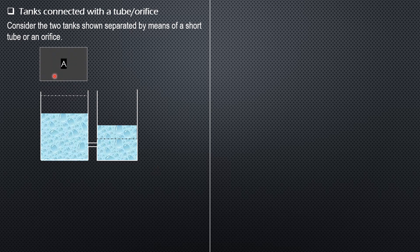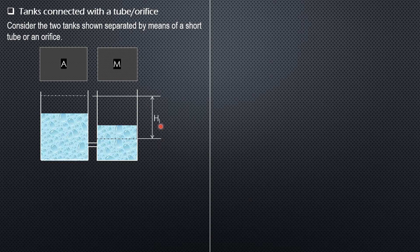We denote the surface area of the left reservoir as A and the surface area of the other tank as M — intentionally using M rather than B so the derived formula will be easy to remember. The initial head H_i is the difference between the original liquid levels in the left and right tanks, and the final head H_f is the difference in elevation of the final surfaces.